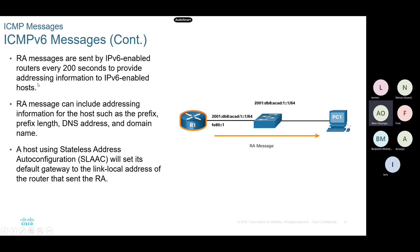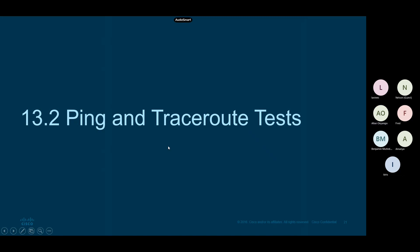Routers by default send RA messages after every 200 seconds, but a host device can also send an RS message to the router. The router must have been configured with an IPv6 address on its interface. The RA messages carry everything needed by the PC - including the prefix, prefix length, DNS address, domain names - and we talked about SLAAC: Stateless Address Auto Configuration.